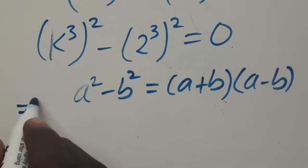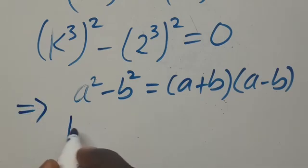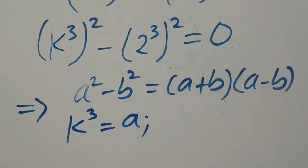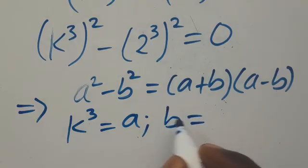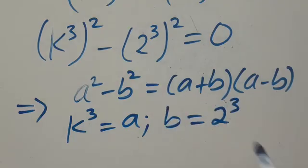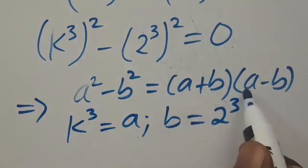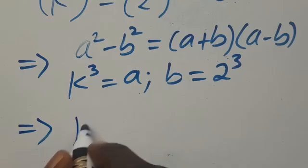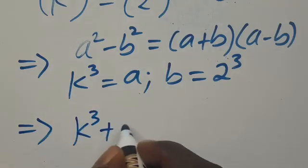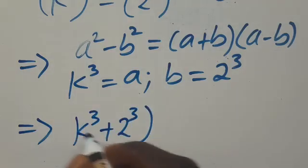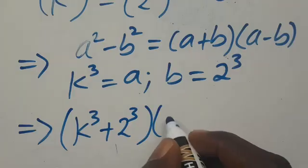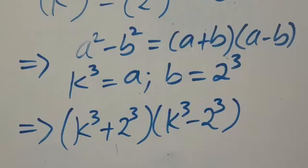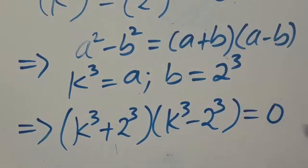So from here, this implies that our k to the power of 30 equals our a, and our b equals 2 to the power of 30. So by plugging it in, we are going to have k to the power of 30 plus 2 to the power of 30, all in brackets, multiplied by k to the power of 30 minus 2 to the power of 30, all in brackets, set equal to 0.